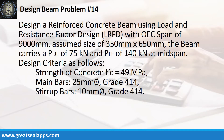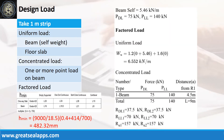Design a reinforced concrete beam using load and resistance factor design with one end continuous span of 9000 mm, assumed size of 350 mm by 650 mm. The beam carries a concentrated dead load of 75 kN and concentrated live load of 140 kN at mid-span. The beam's self-weight yields a factored uniform load of 6.552 kN per meter and a factored concentrated load of 314 kN.